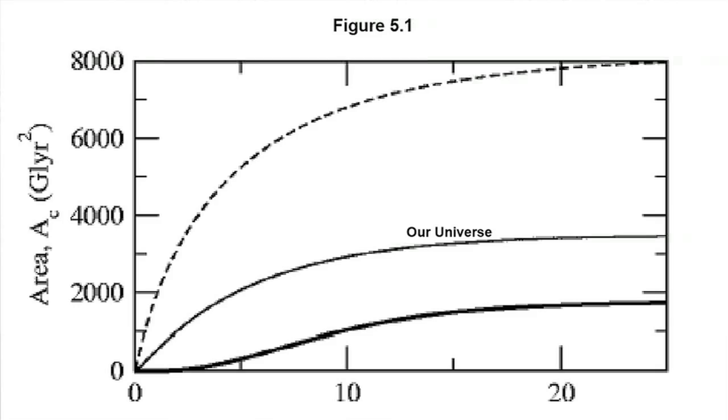Here's the thing: that entropy is also proportional to the thermodynamic entropy. At the alpha point, the area of our future horizon was one bit — it was only one bit. But it quickly expands and saturates out to about 10 to 124 bits. That's the second law of thermodynamics.